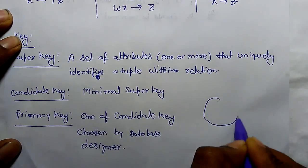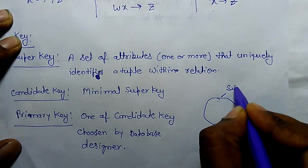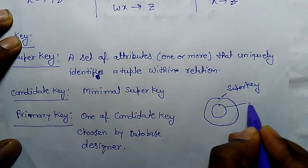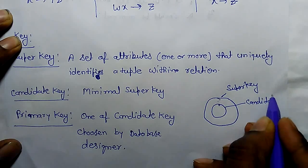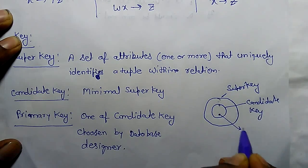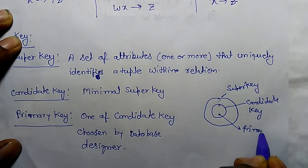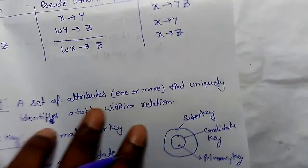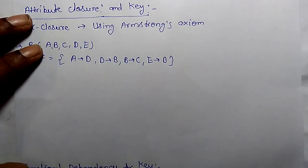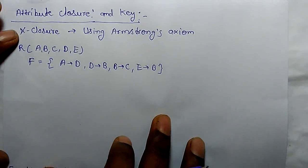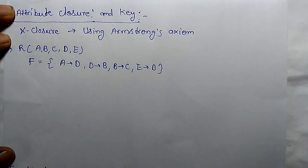So a super key functionally determines all attributes. The candidate key would be a subset of super key, and one of the candidate keys would be the primary key. Now let's understand the closure — how we can find the attribute closure using Armstrong's rules.